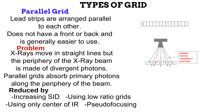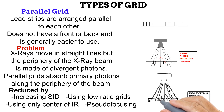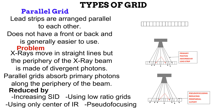Lastly, peripheral cutoff can be reduced by something known as pseudo-focusing. In this, the manufacturer reduces the height of the lead strips at the edges of the grid — the peripheral lead strips. As seen on the diagram, this makes it easier for the divergent peripheral photons to pass through.